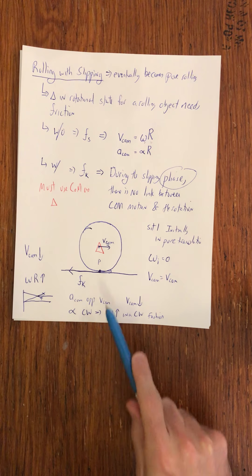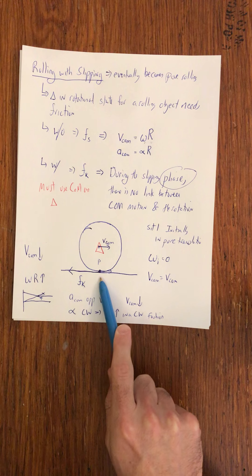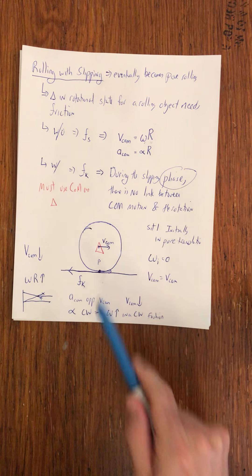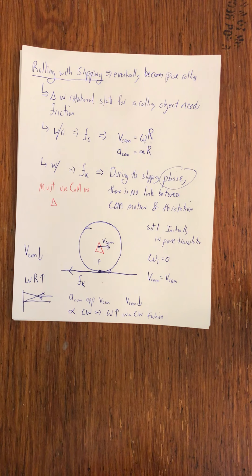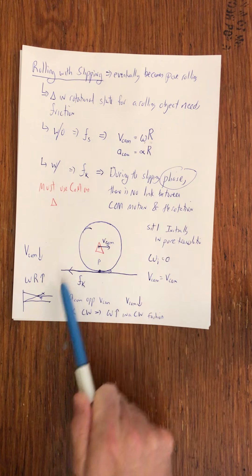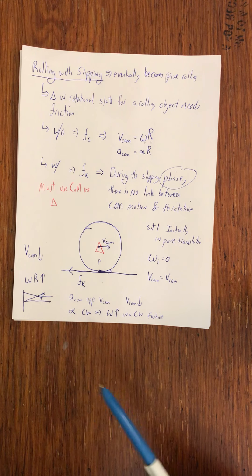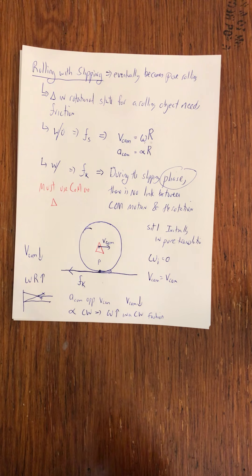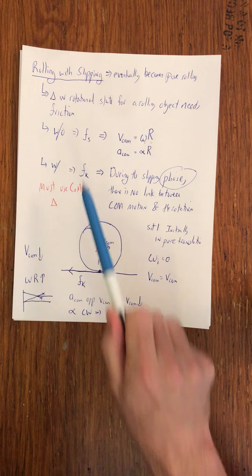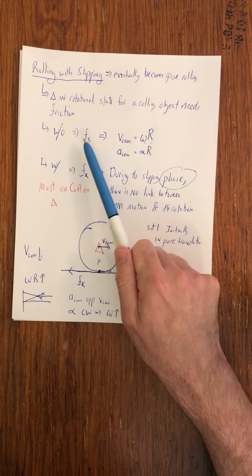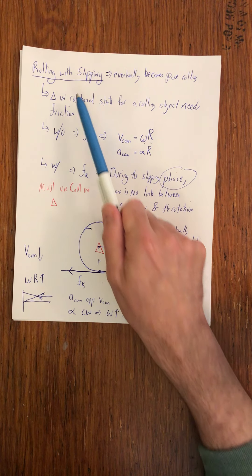Every rolling with slipping problem, eventually given enough time — unless there's some constraint where kinetic friction only lasts for a certain period — eventually becomes pure rolling. We can use that notion to figure out when the slipping phase stops. When you get to pure rolling, friction goes away entirely because the object has no reason to accelerate. It just reaches pure rolling and rolls at a constant velocity. The frictional force only occurs during changes in rotational state.